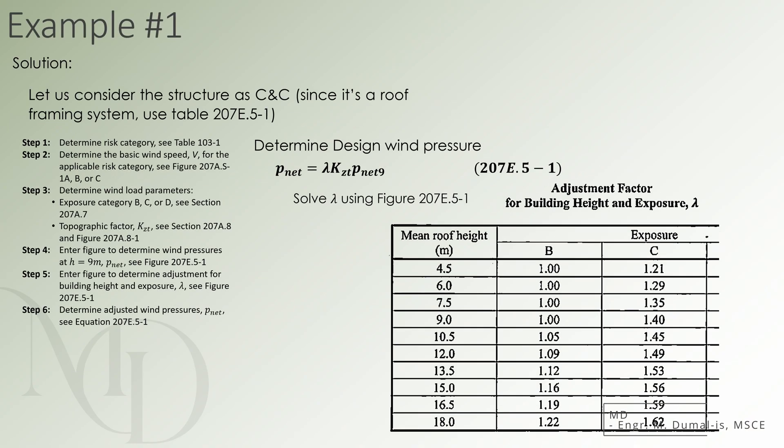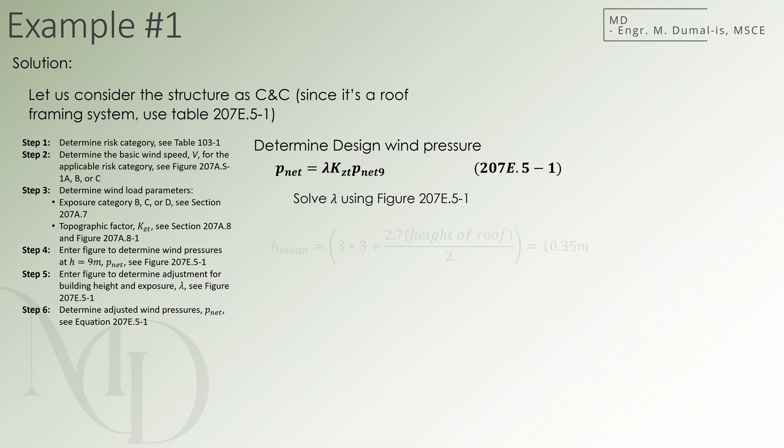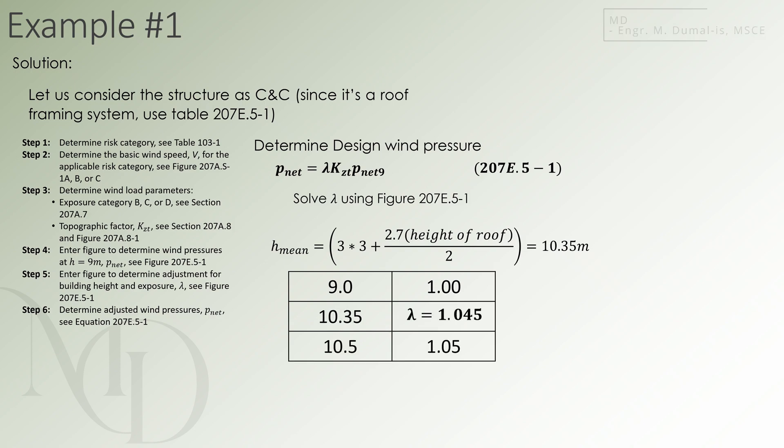Looking at the table, it seems that we must also solve for one additional parameter, which is the height. The height used for wind load analysis must be the mean roof height, often referred to as H mean. In this case, with three floors, each being 3 meters tall, plus one half of the roof height, we compute the mean roof height to be equal to 10.35 meters. This height falls in between 9 meters and 10.5 meters, where the corresponding factors are equal to 1 and 1.05, respectively. We now interpolate the corresponding factor for a height of 10.35 meters, and the result is approximately 1.045.